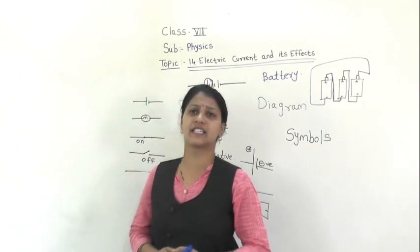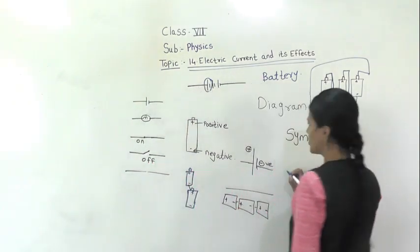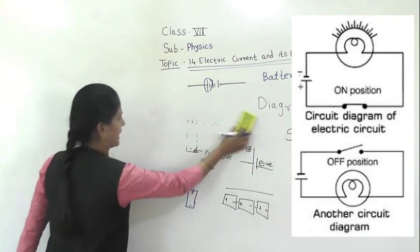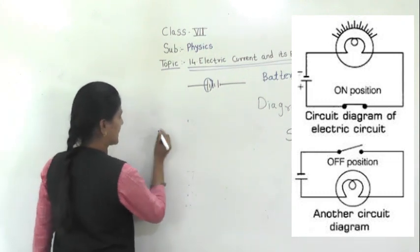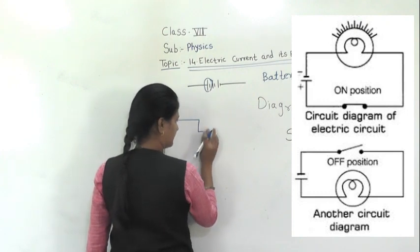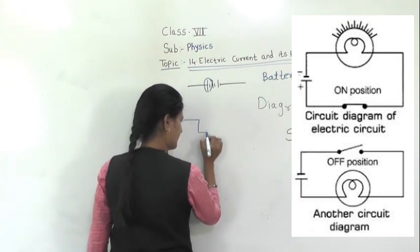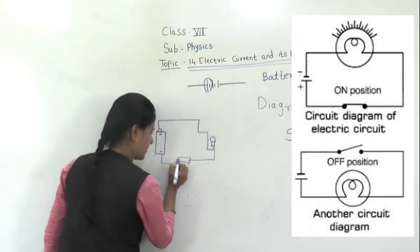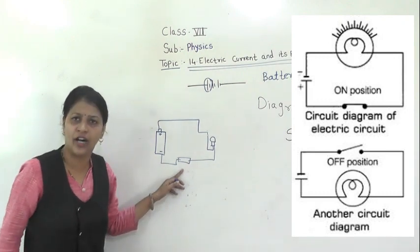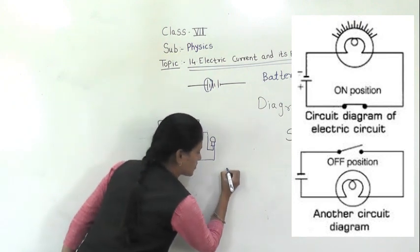In class 6 we also learned one more concept: if we want a circuit to be complete, we use a switch. In the class 6 connection: this is a cell, the cell is connected to the bulb, and then we need a switch. When the switch is on, only then will the bulb glow. When the switch is on, the bulb glows. Switch is very important. We can represent the switch by a symbol.